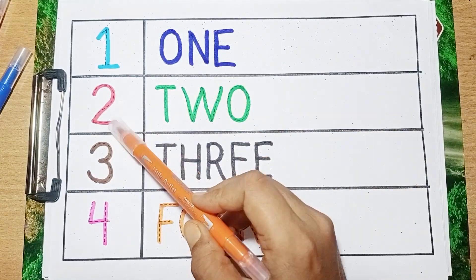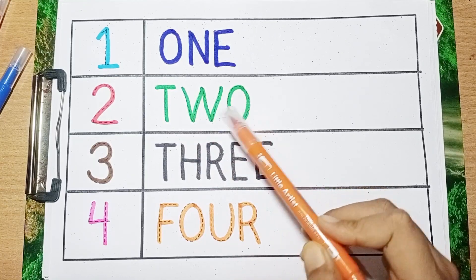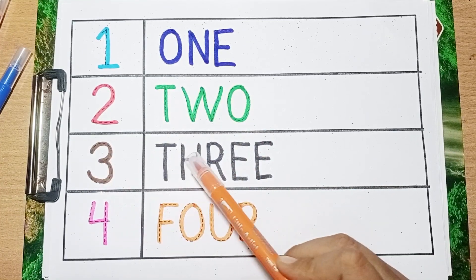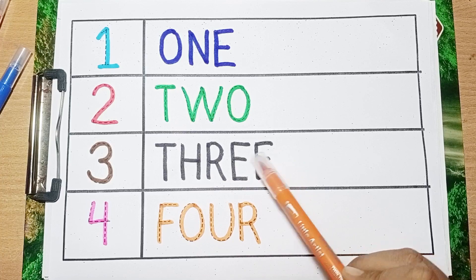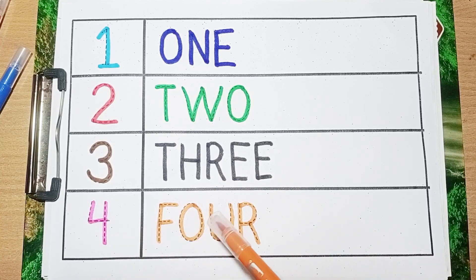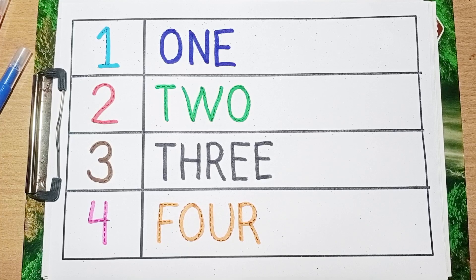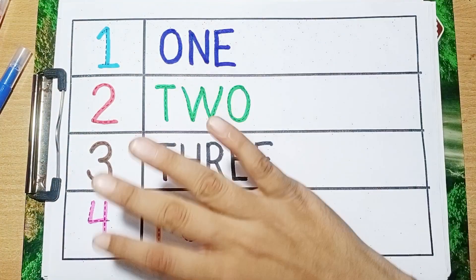O-N-E, one. Two, T-W-O, two. Three, T-H-R-E-E, three. Four, F-O-U-R, four. If you learned from this video, please like, share, and subscribe the channel. Bye!